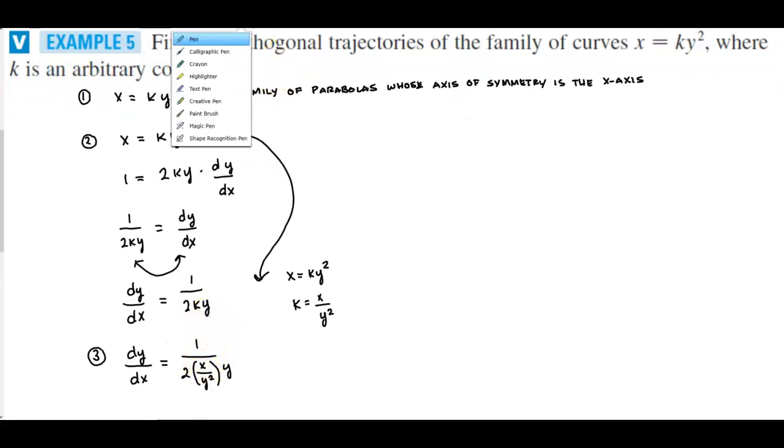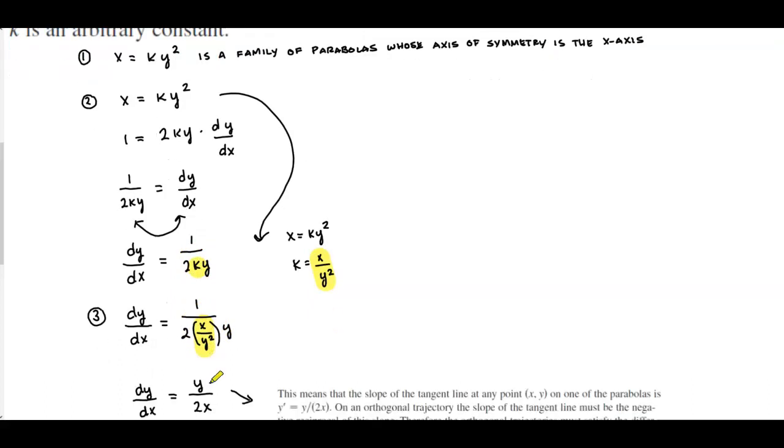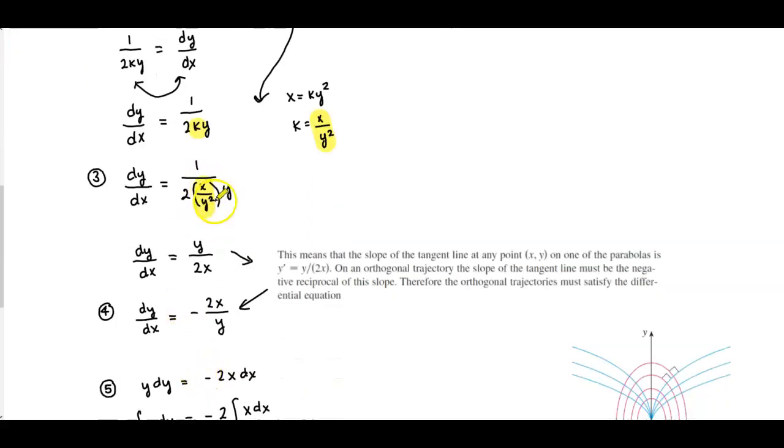Now what we want to do is substitute what we have at the beginning. Here on this family of curves we can solve for k and by solving for k we're going to get x over y squared. So then we're going to substitute k to be x over y squared in step three and then we can simplify.